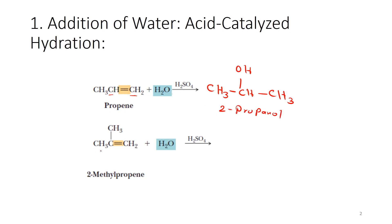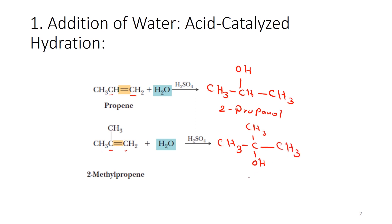Moving to 2-methylpropene, it will follow the same rule — Markovnikov's rule — the addition of the hydroxyl will be at the carbon carrying the least number of hydrogens, and the addition of hydrogen will be at the other carbon. So I have CH3, C, then the methyl group, then the hydroxyl group after the breaking of the double bond, and then CH3. By that, we form 2-methyl-2-propanol.